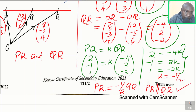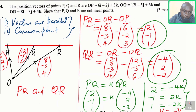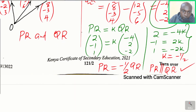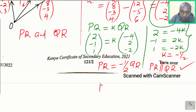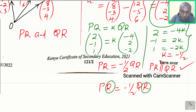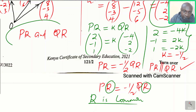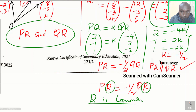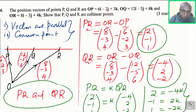We have shown the two vectors are parallel. Now notice that PR equals negative one half QR, and there is a common point: R is common between the two vectors PR and QR. This is also required to show the points are collinear. Since the two vectors are parallel and share a common point R, we have shown that P, Q, and R are collinear points.